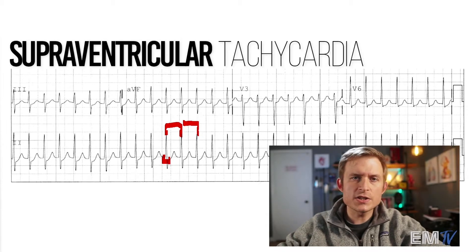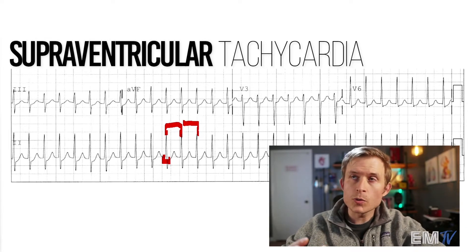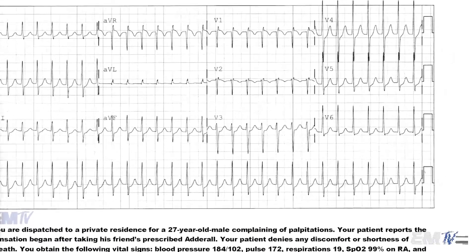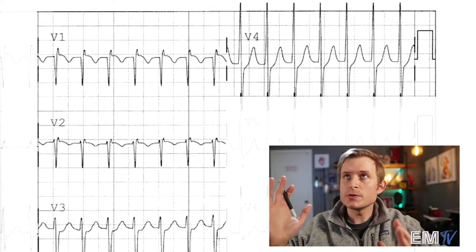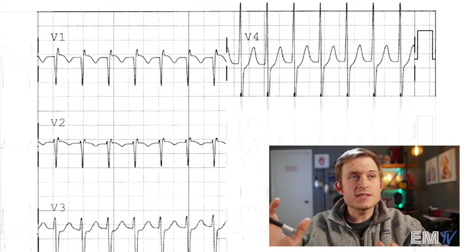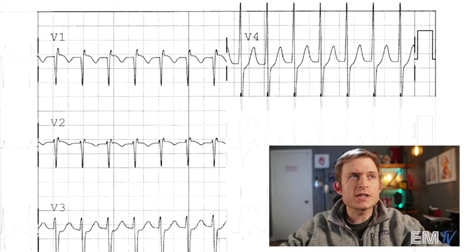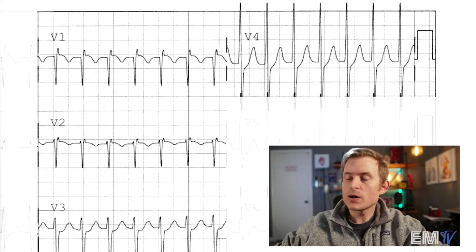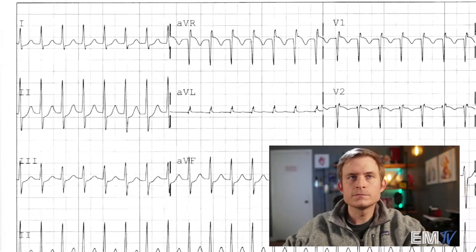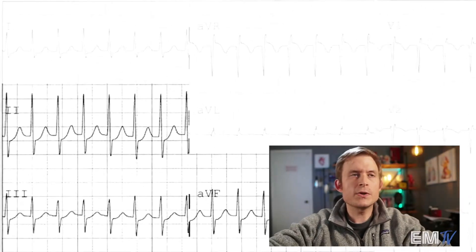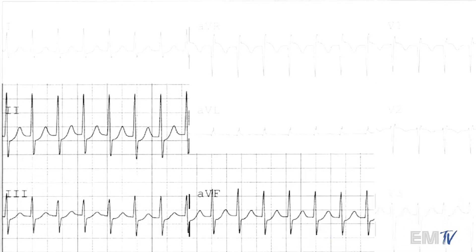Let's now take a look at each individual lead grouping to see if we can find anything more malignant or anything more wrong with this rhythm. In examining the anterior leads — this is where I prefer to start — V1 through V4, I'm not seeing any ST segment elevation. I am, however, seeing ST depression in V3 and V4. In my inferior leads, which are 2, 3, and AVF, I'm not seeing any ST segment elevation, but I'm seeing, once again, ST segment depression in all of those leads.